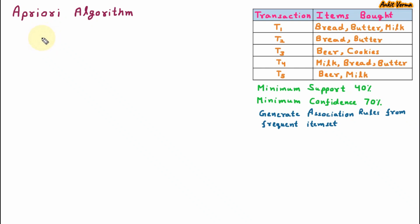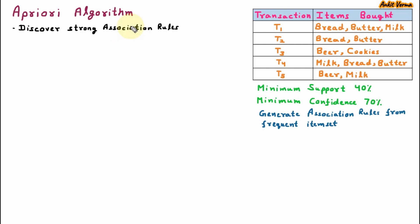Hello everyone, my name is Ankit. Today we are learning the Apriori algorithm. Apriori is the algorithm of association rule mining. It is used to discover strong association rules. We are taking one example to understand the Apriori algorithm.